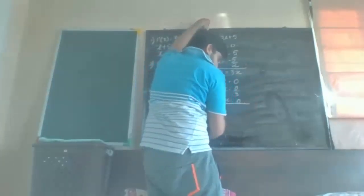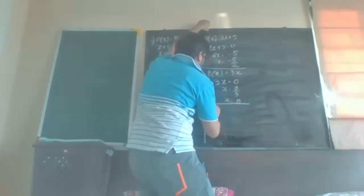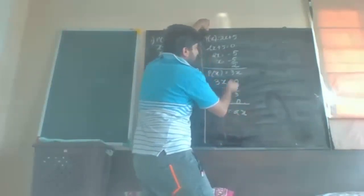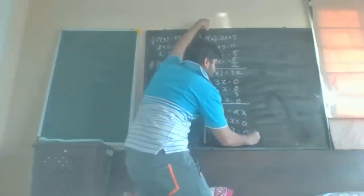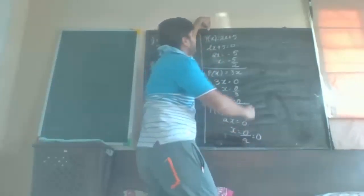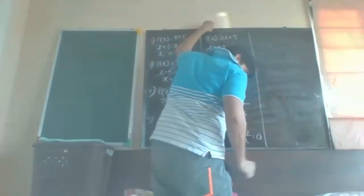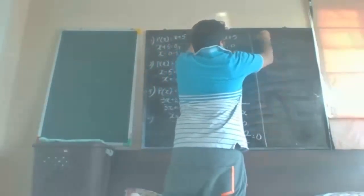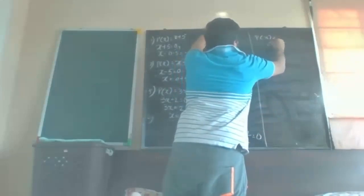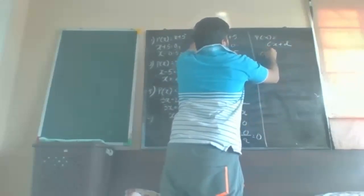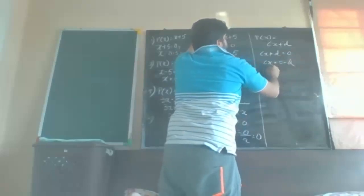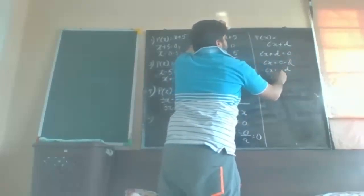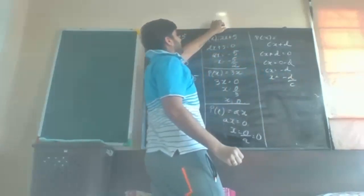Next: p(x) = ax. Set ax = 0, so x = 0/a, answer is 0. The last sum: p(x) = cx + d. Set cx + d = 0, so cx = −d, and x = −d/c. That is the end of our exercise 2.2.